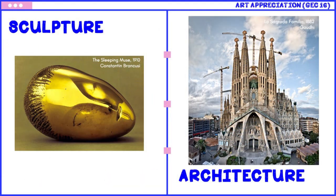Also for sculpture, we have The Sleeping Muse, 1910, by Constantin Brâncuși. This sculpture is a bronze one; it was originally carved from marble. For architecture, we have La Sagrada Família, a Roman Catholic minor basilica in Spain, by Gaudí, begun in 1882.